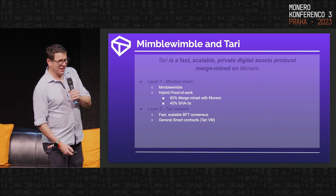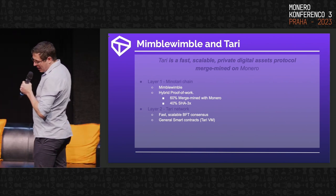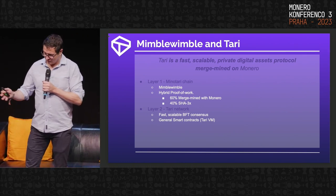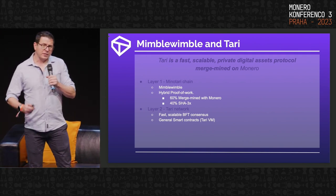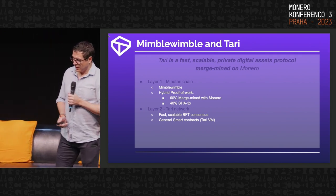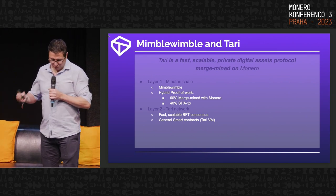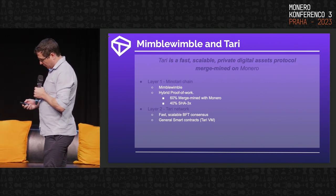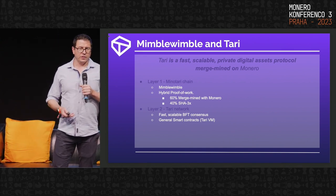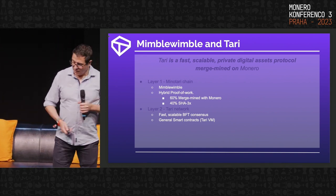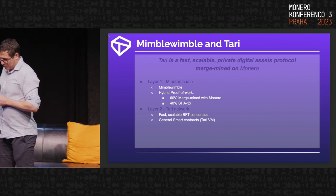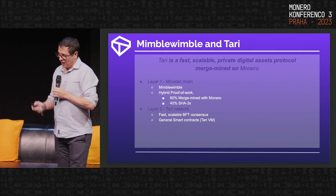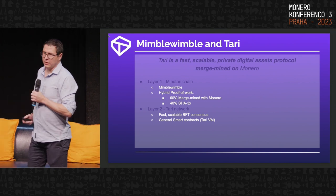Judging by some of the conversations I've had this weekend, rumors of Tari's demise have been greatly exaggerated. We've been working hard for the last couple of years to build this protocol. It's architected on two layers. The layer one is what we call the Minotari chain — a proof-of-work based protocol built on Mimblewimble, hybrid proof of work, with 60% of the blocks merge-mined with Monero. Underneath that is a second layer, the digital assets network, where the smart contracts run.